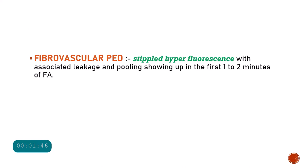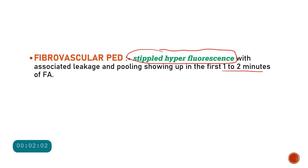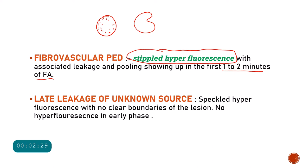On fundus fluorescent angiography, a fibrovascular pigment epithelial detachment shows stippled hyperfluorescence with associated leakage and pooling, and all of this happens within the first one to two minutes of the angiogram. There will be a well-defined, circular or C-shaped pigment epithelial detachment which gradually shows hyperfluorescence over one to two minutes, with a speckled or stippled kind of hyperfluorescence — that tells you it is the fibrovascular PED.